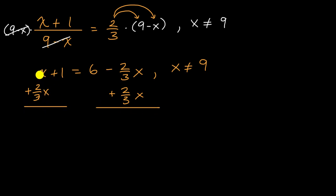And then what do we have? Well, on the left-hand side, we have one x, which is the same thing as three-thirds x, plus two-thirds x is going to give us five-thirds x plus one is equal to six, and then these characters cancel out. And then we can just subtract one from both sides, and we get five-thirds x is equal to five.